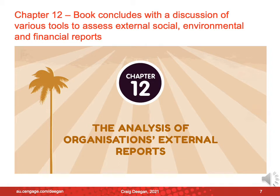Reflecting what we think is a very logical structure used to develop this book, the final chapter concludes with a discussion of various tools to assess the reports we've already been discussing. The book starts with a first module on accounting and accountabilities, then moves to management accounting, then to financial reports, social reports, environmental reports, and sustainability reports. Chapter 12 then introduces tools to look at those reports that have been developed and discussed throughout the book.